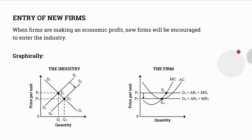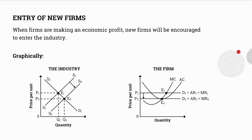We are now going to examine the entrance and exit of firms from a graphical point of view. Let's start with the entrance of new firms. When firms are making an economic profit, new firms will be encouraged to enter the industry. Starting with the original situation, where D1 and S1 intersect, the equilibrium point E1, price of P1, and quantity of Q1 is formulated. The firm is a price taker, meaning it will adopt the price of P1. At the price of P1, average costs clearly lie below the average revenue, indicating that the firm has earned an economic profit. Economic profits act as a signal for new firms to enter the industry, and therefore the supply will increase.